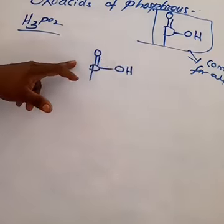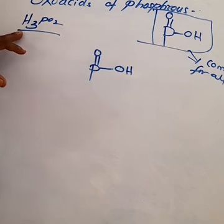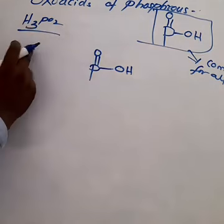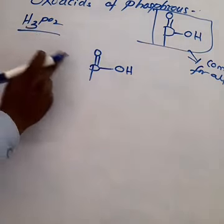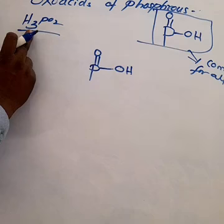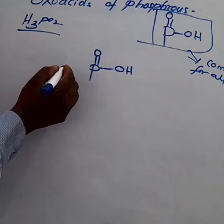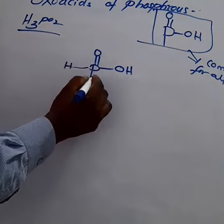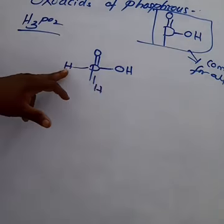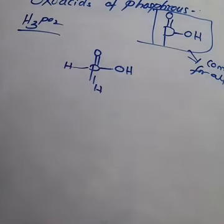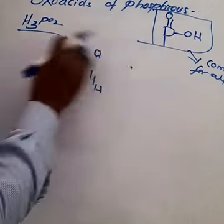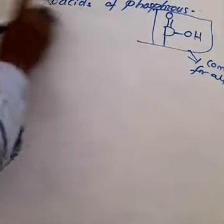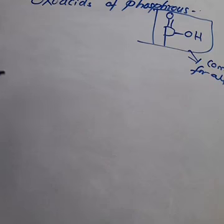For hypophosphorous acid H3PO2: the common group P=O and OH accounts for 1 hydrogen, 1 oxygen, and 1 phosphorus. From the formula H3PO2, the remaining are 2 hydrogen atoms. These 2 hydrogen atoms are placed on two different sides of the phosphorus, giving the structure of hypophosphorous acid.